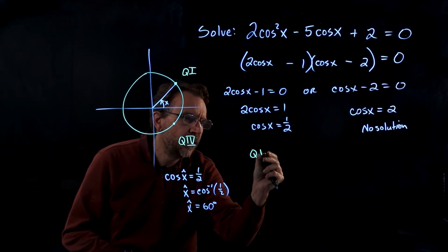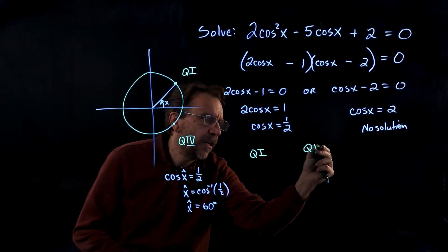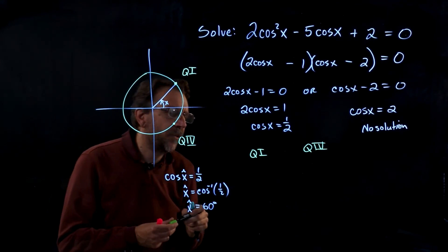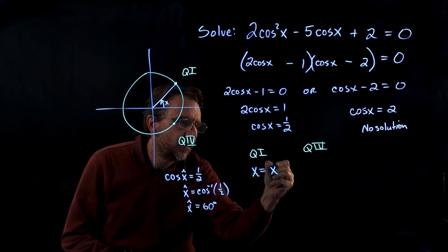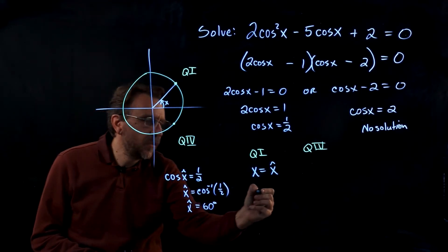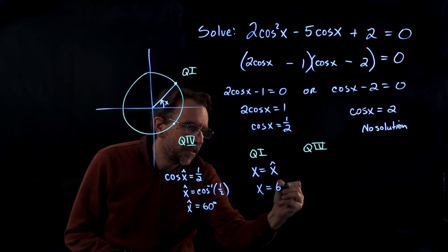So that's our reference angle. And in q1, we're going to have q1 solutions, and we're going to have q4 solutions. So in q1, always x equals the reference angle. So in this particular case, x equals 60 degrees.